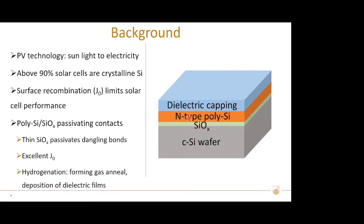Hydrogenation is commonly realized by thermal anneal in forming gas, or by deposition of dielectric films like silicon nitride, aluminum oxide, or a stack of AlOx and nitride, followed by thermal anneal to release the hydrogen from the dielectric film into the silicon wafers.